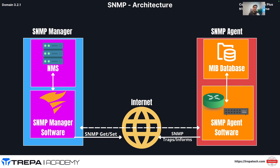Traditionally, basic SNMP has the manager pulling the agent. But if we want information faster — like when an interface goes down and we don't want to wait for the 30-second polling interval — we set up an SNMP trap or inform message. We can configure on the agent that if a syslog message says an interface went down, it will automatically send that information to the SNMP manager. An SNMP trap is unreliable in that we don't need a response. With an SNMP inform message, we verify delivery by asking the manager to respond, and if we don't get that response, we keep sending.